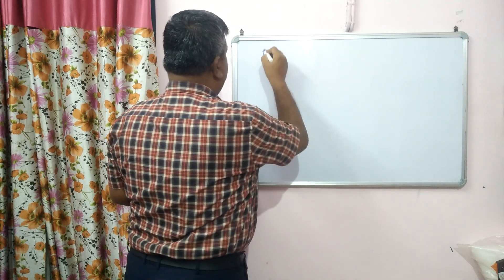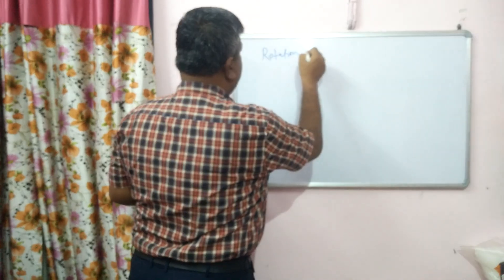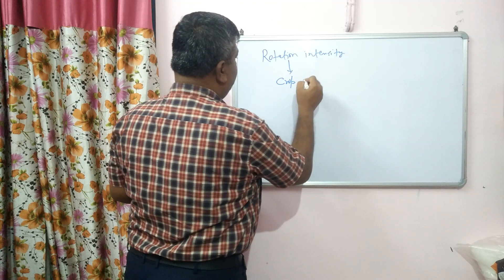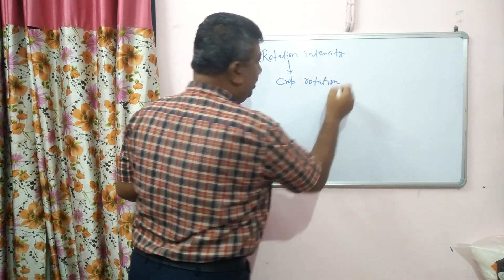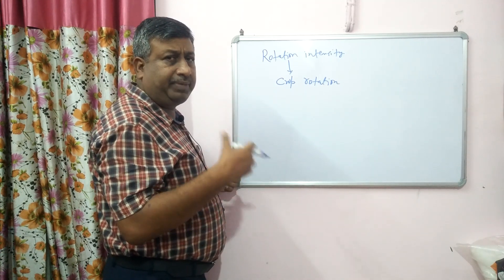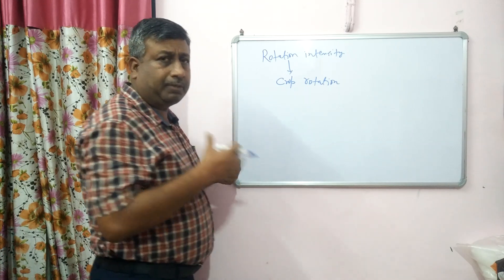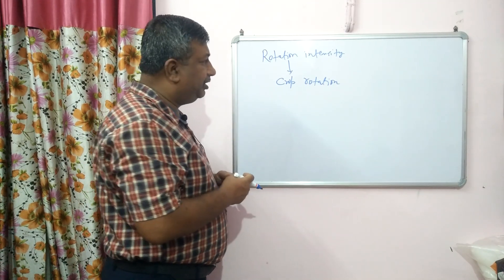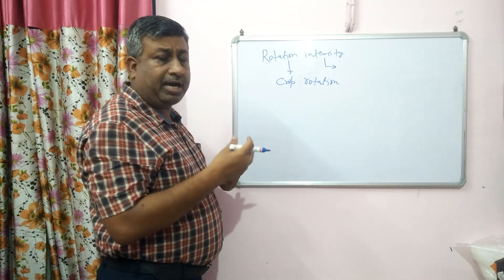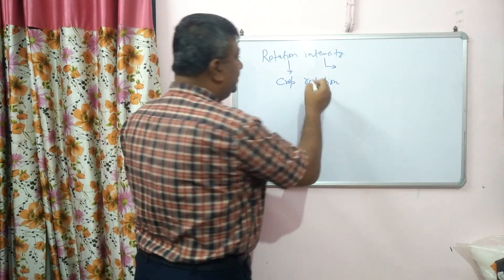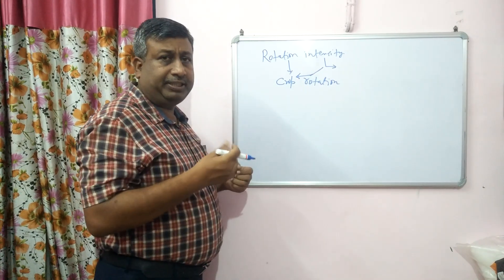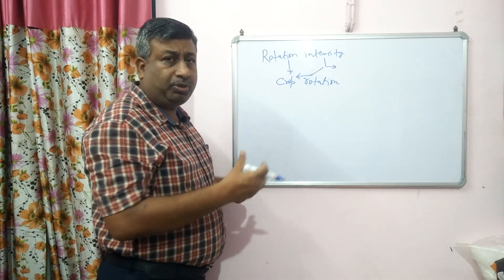When we talk about rotation intensity, it is related with crop rotation. It gives information about the crop rotation which is followed on a field — maybe rice-wheat, maybe rice-mustard, or maize-mustard, or maize-wheat. There are different types of crop rotation practiced in different parts of the country. This intensity means how frequently we are growing the crop — that is the rotation intensity.